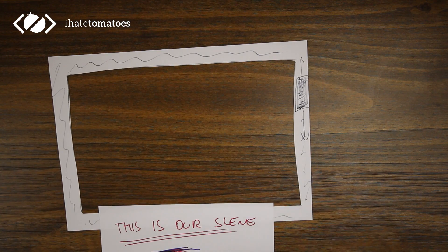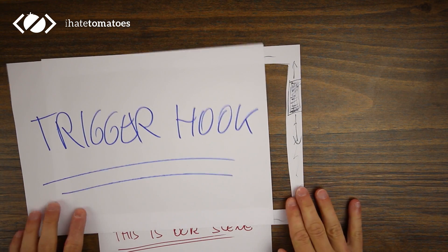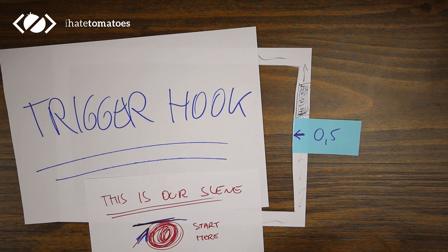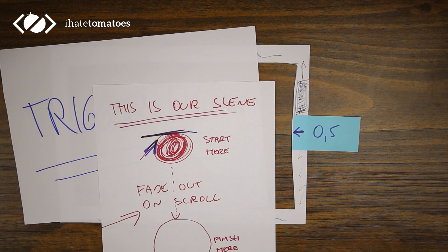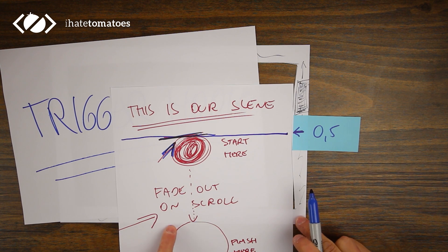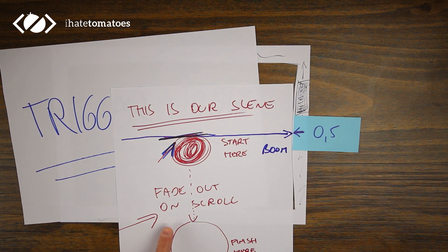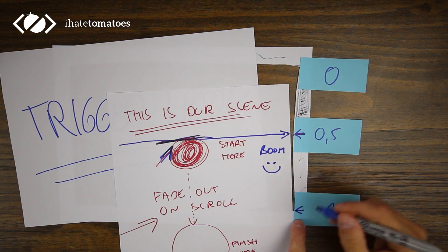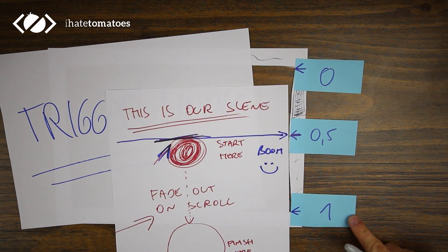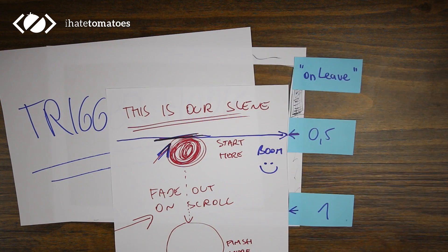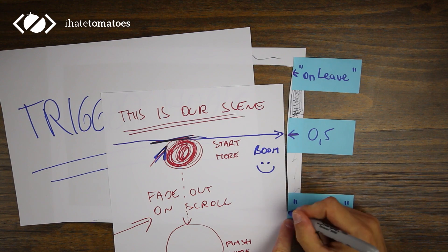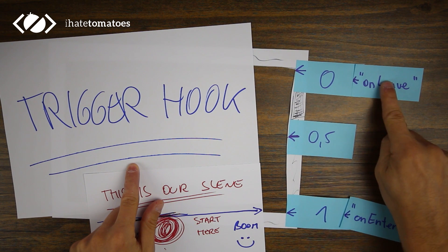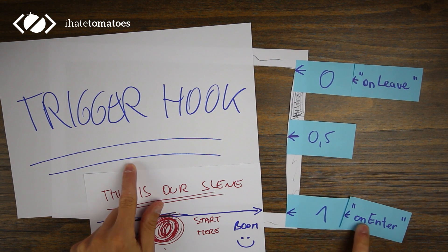Now that we have our scene and tween defined, we would already see movement on the page because the trigger hook is by default set to the middle of the viewport. The trigger hook default value is 0.5, which means that when the top of our element reaches the middle of the viewport the animation is triggered. You can use any number between 0 and 1 to define your trigger hook — 0 would be the top of the viewport, 1 would be the bottom, or alternatively you can use the keywords 'onLeave' and 'onEnter'. Zero is the same as onLeave and one is the same as onEnter.